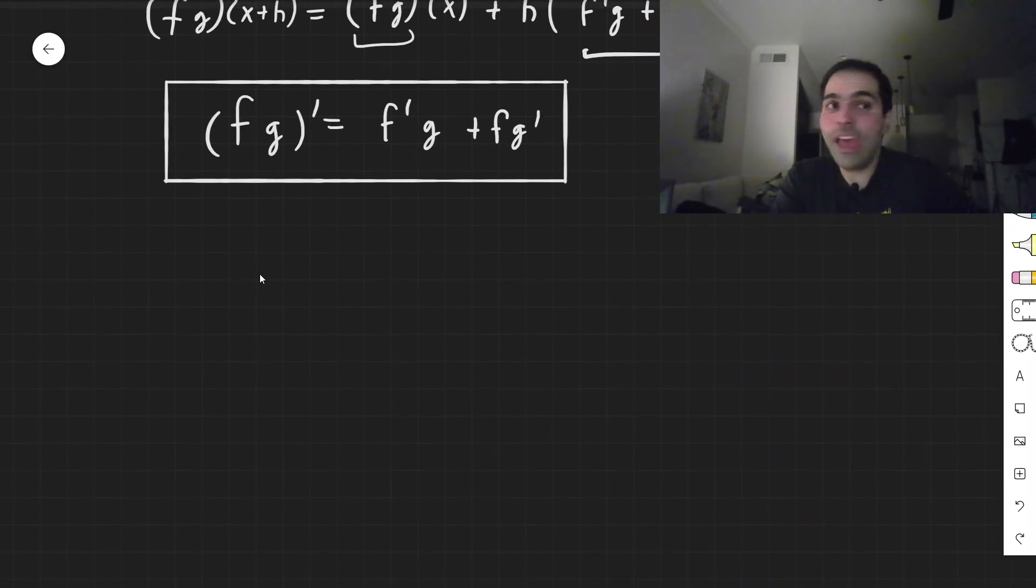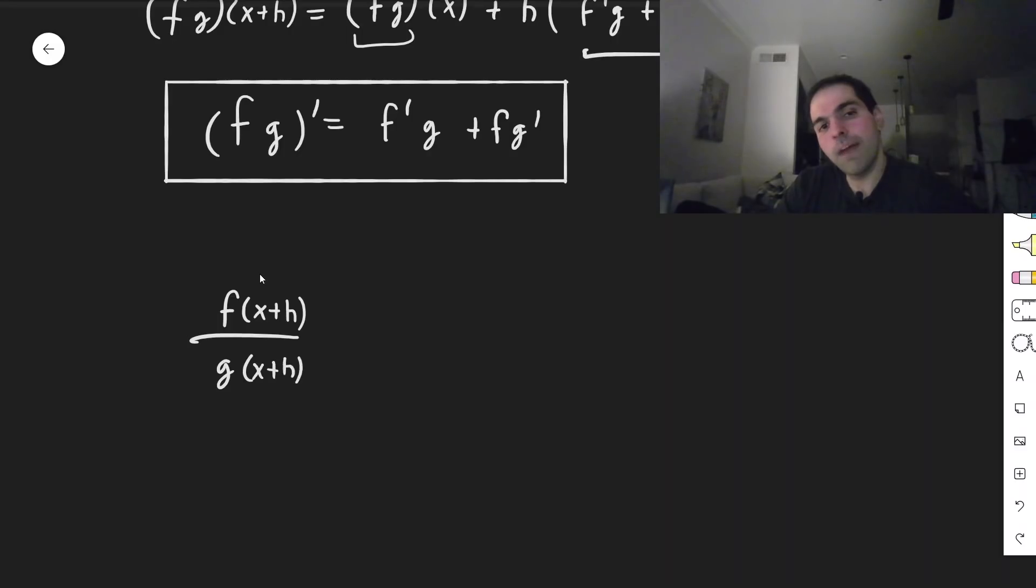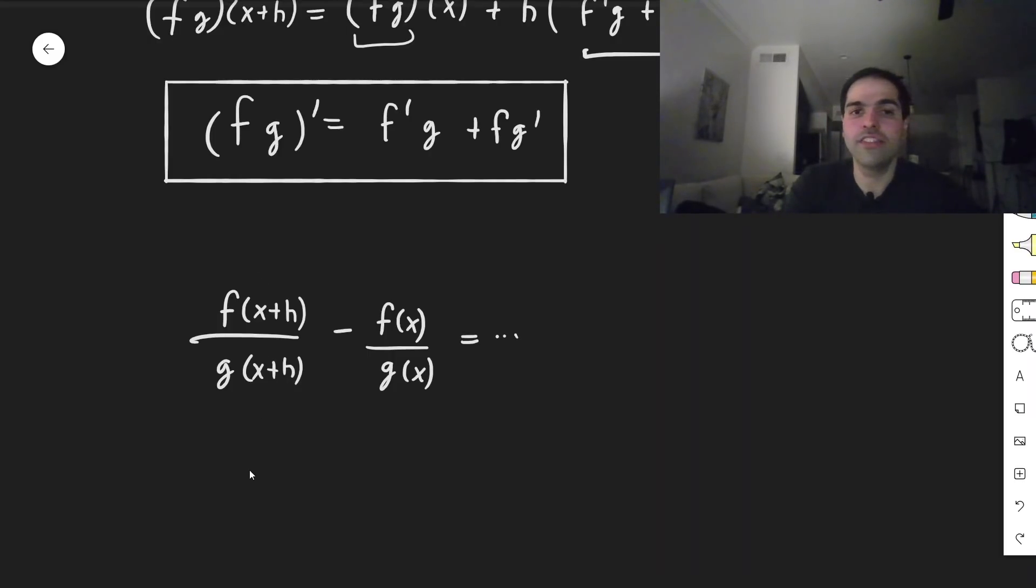And by the way, you can also show the quotient rule in the same way, simply by considering f of x plus h over g of x plus h minus f of x over g of x, and putting it on the common denominator and showing that the derivative is what you think it is.